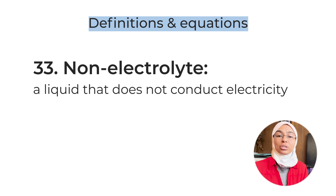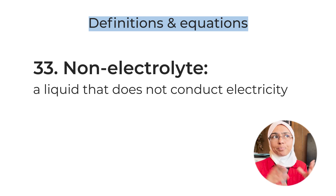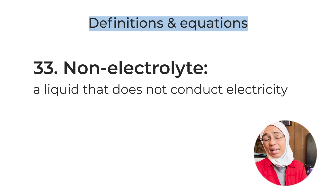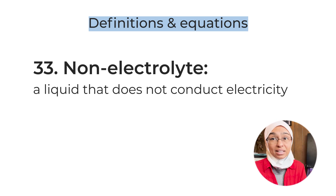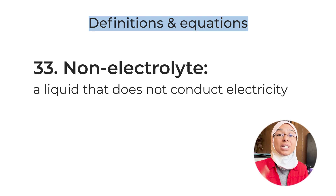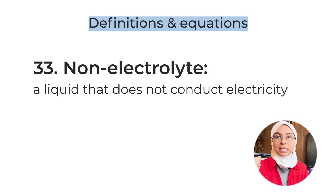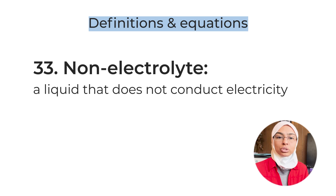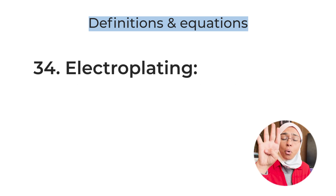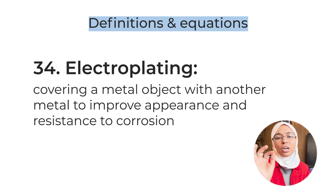Definition number thirty-three: non-electrolyte — a liquid that does not conduct electricity. Examples include pure water, sugar solution, ethanol, oil, and anything covalent or organic. One exception is ethanoic acid and other carboxylic acids — these are covalent but are weak acids that do conduct electricity. Definition number thirty-four: electroplating — covering a metal object with another metal to improve appearance and to prevent or improve resistance to corrosion.